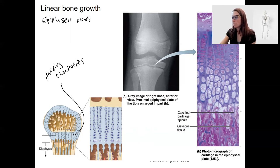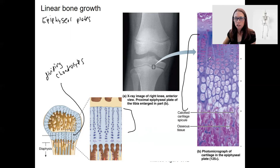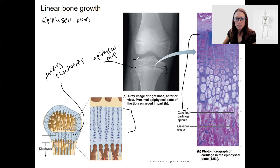This plate is present in children and adolescents. This picture here is basically the same as this — this is a histology picture. Here you can see we're zoomed into the edge of a long bone, where this would be the knee. This is the epiphyseal plate, and this would be the end of this bone here. You can see the plate on this x-ray here.